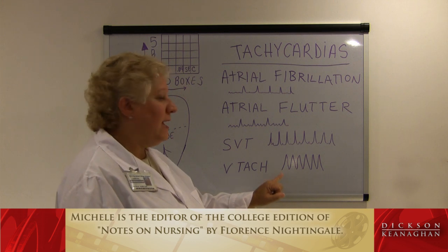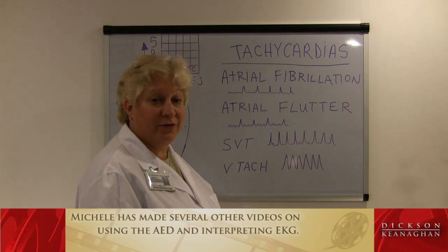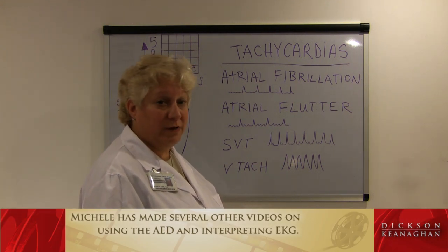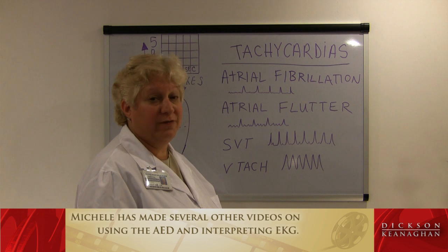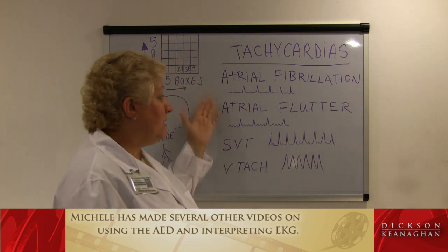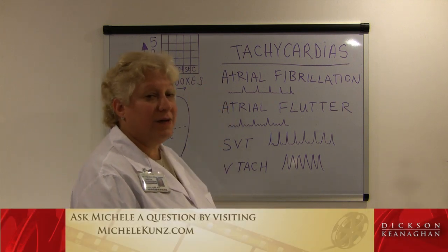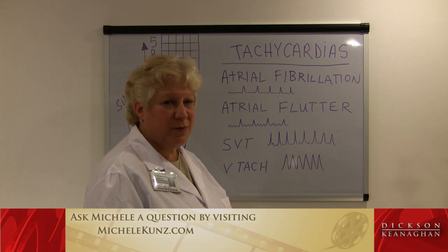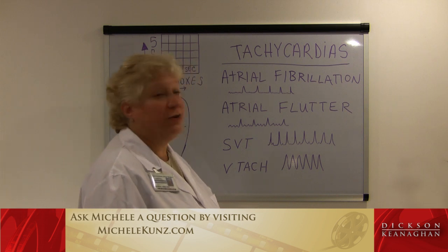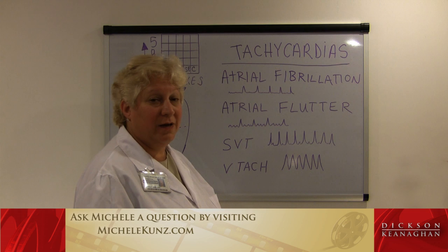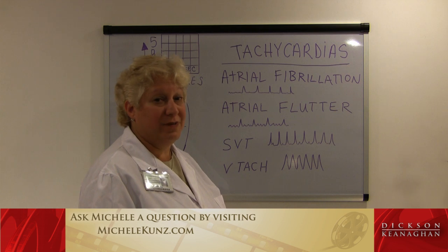After amiodarone and synchronized cardioversion, we can also try lidocaine. The first dose for an average-size patient is 100 milligrams, followed by another synchronized cardioversion and repeat doses of 50 milligrams. In summary, for all tachycardias: try vagal maneuvers, try drugs, and if the patient becomes unstable — with chest pain, shortness of breath, change in mental status, crackles in the lungs, or hypotension — go directly to synchronized cardioversion. The more you read about this and practice, the more comfortable you'll be with the equipment.